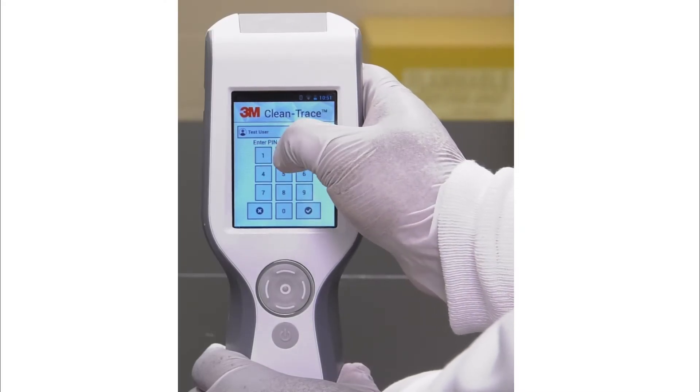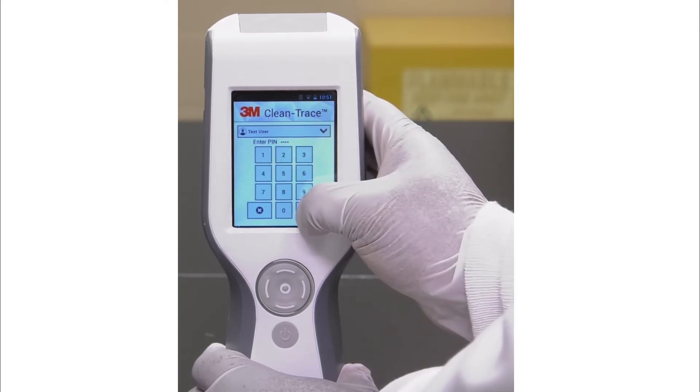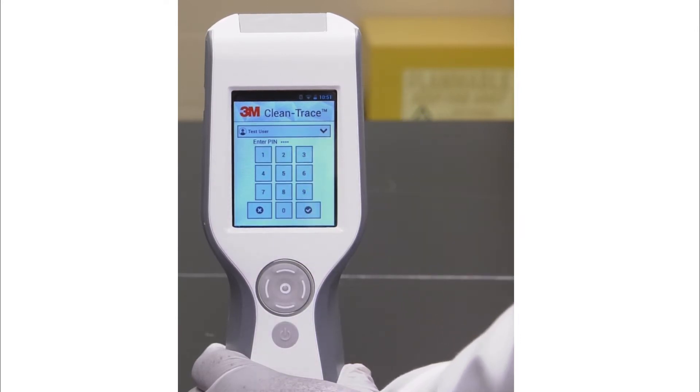If the PIN code is enabled, enter your 4-digit PIN number and tap the check box in the lower right corner. You may request the default user's PIN code through the online support form or through your 3M representative.